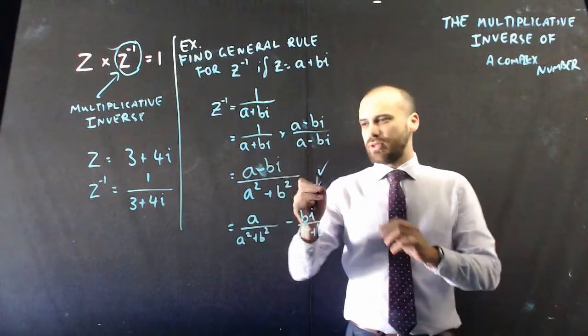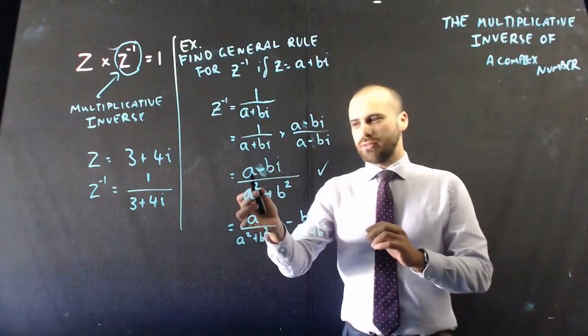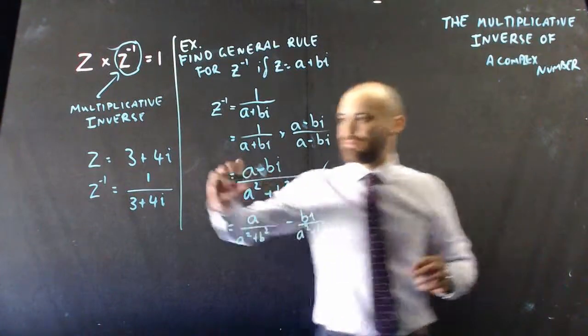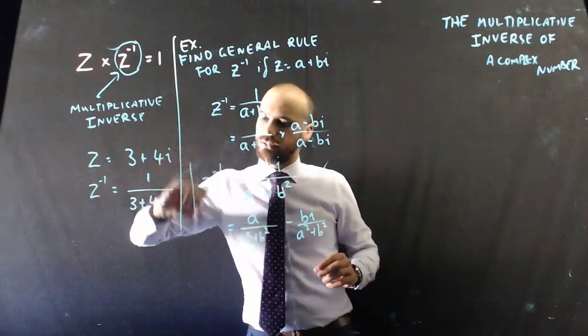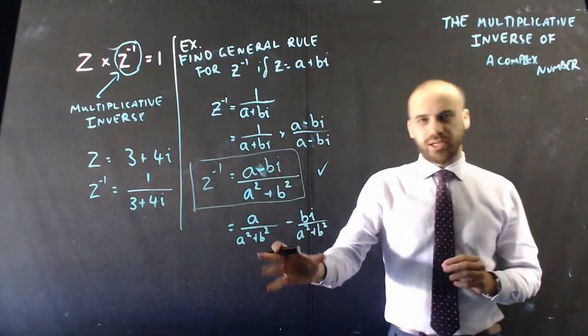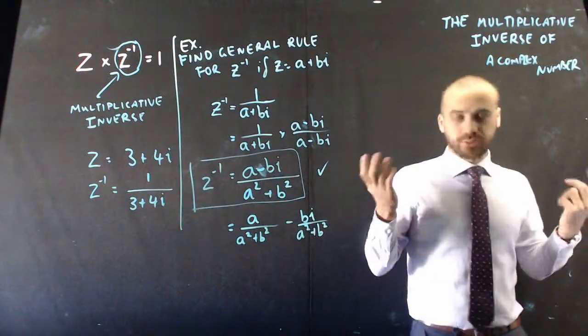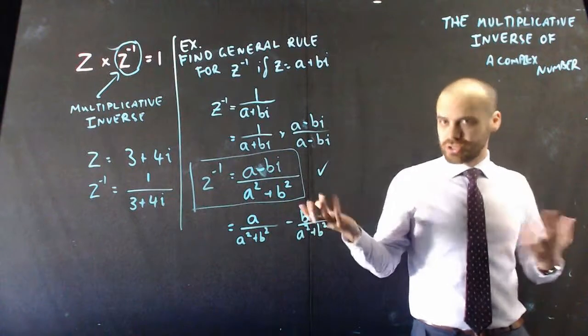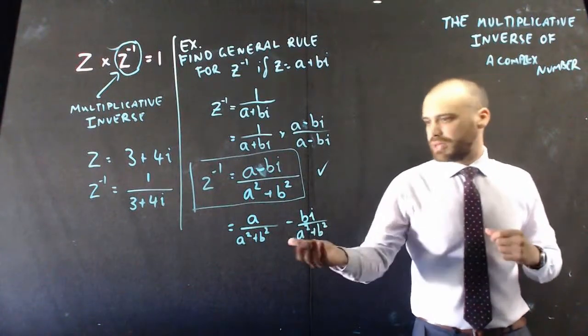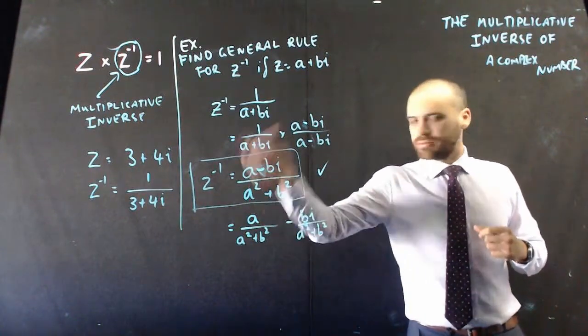We tend to sort of use that as our general rule and then just split it up. And then just split it up at the end there. So that's the multiplicative inverse of a complex number. We got to use conjugates again, which is fun. And now we have this nice little neat rule.